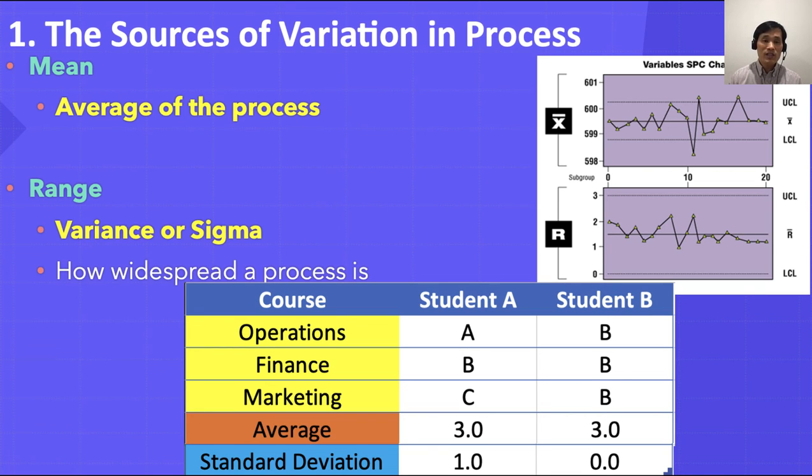Anyway, the point of this example is that we need to look at not only the average but also the variance or standard deviation, or risk factor or sigma. We have to look at both sides to understand the whole picture.